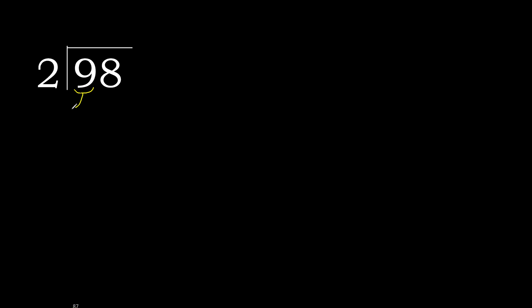98 divided by 2. 9 — 2 is not less than 9, therefore we work with 9. We need to find which number, when multiplied by 2, is nearest to 9 but not greater.